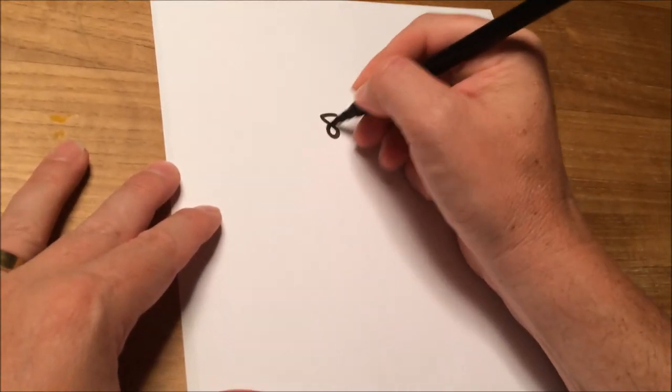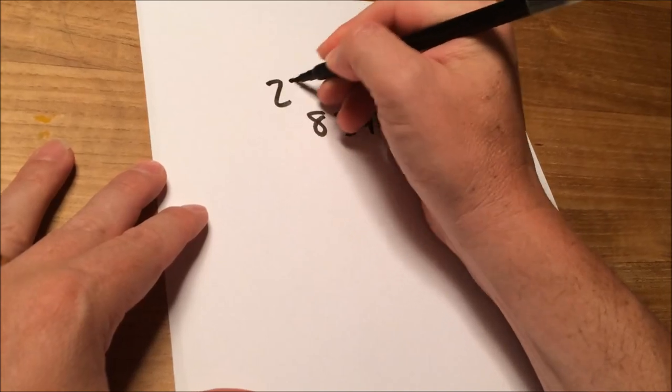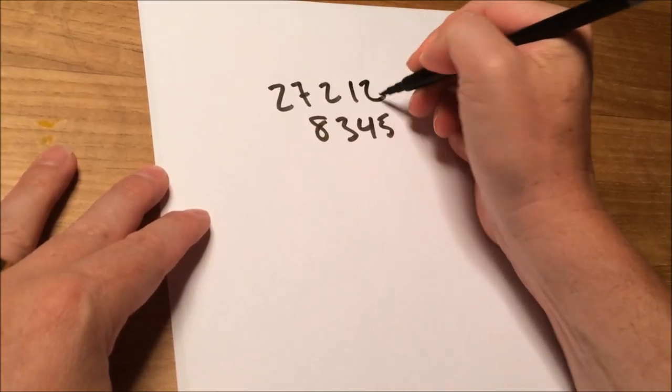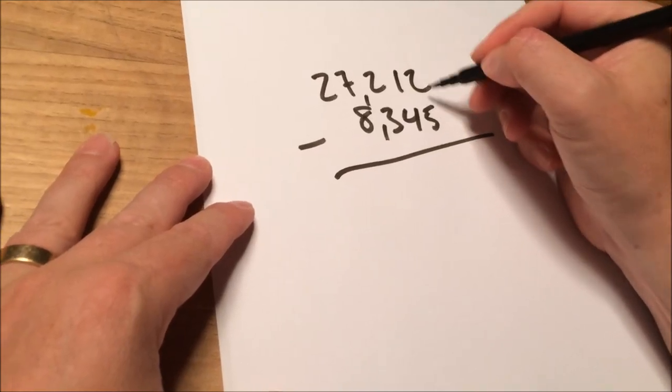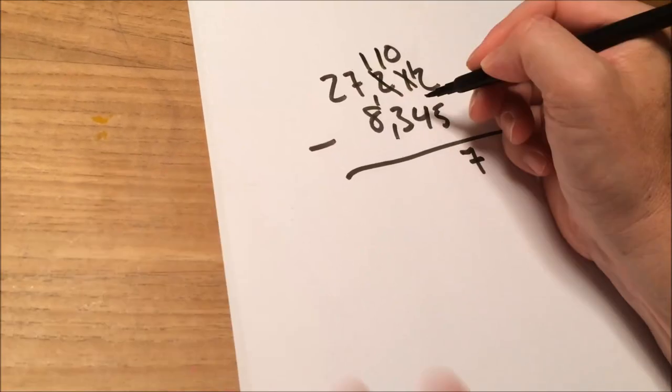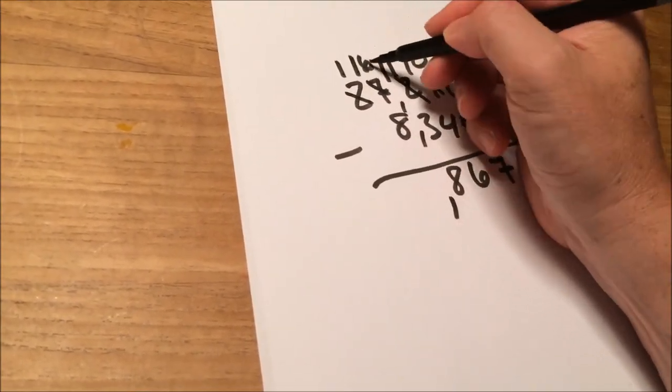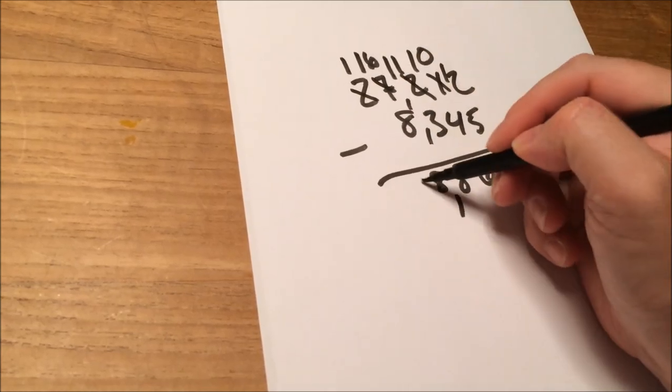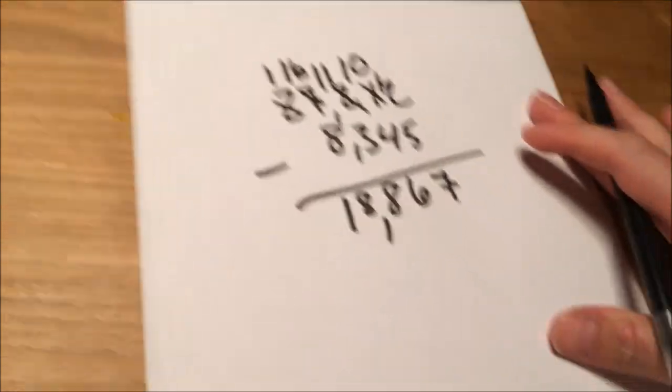In America, if we want to subtract 8,345 from 27,212, we do it like this. 2 minus 5, you can't do so you have to borrow 1 over here. This becomes 12. 1 minus 0 is 0. 18,867.